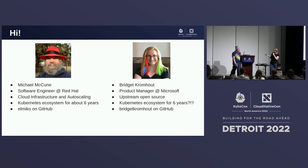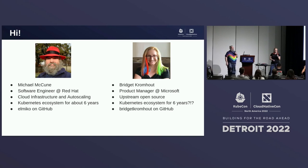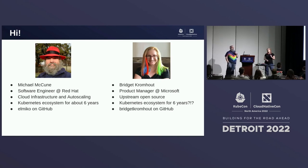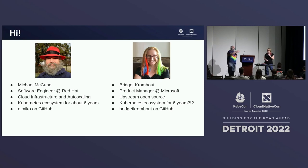Shall we introduce ourselves? My name is Michael McEwen. I'm a software engineer at Red Hat, mainly working on cloud infrastructure and auto scaling related topics. I've been working in and around the Kubernetes ecosystem for about six years now, and if you want to look me up on GitHub, that's my handle.